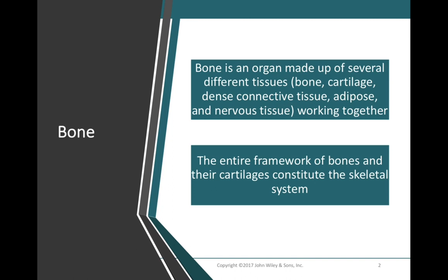Bones give our body structure and shape, and provide a surface area for muscles to attach to. When the muscular system and the skeletal system come together, our bodies can produce useful movement. But those are not the only functions — the skeletal system also plays a very large role in calcium homeostasis, helping to regulate blood levels of calcium. Just as with all 11 body systems, bone is integral to the function of the rest of the body to maintain homeostasis.